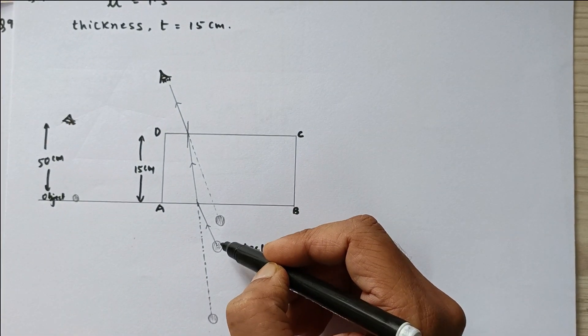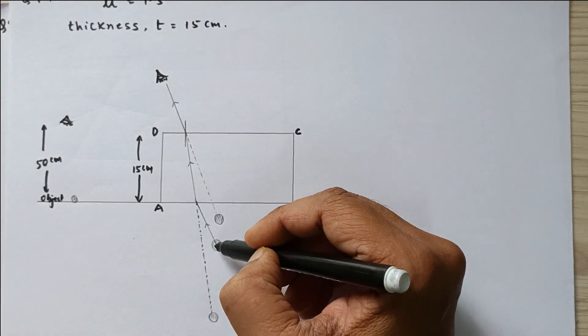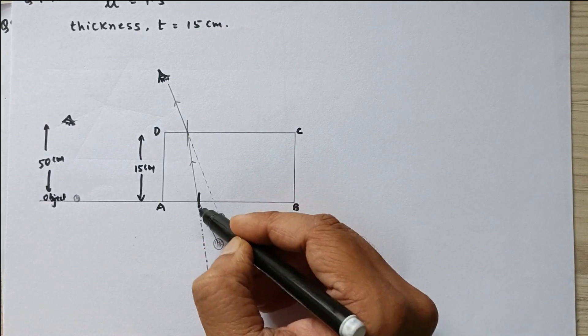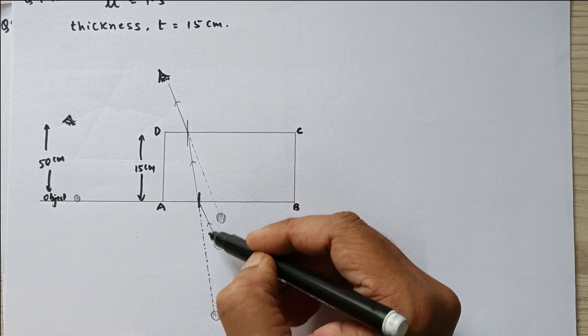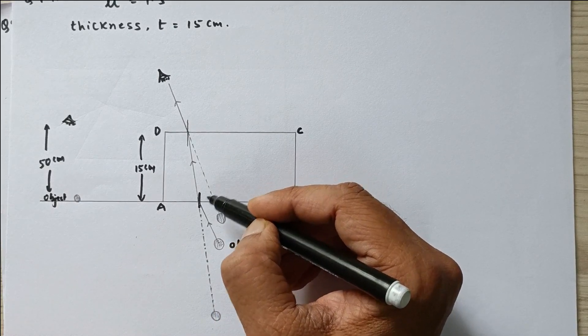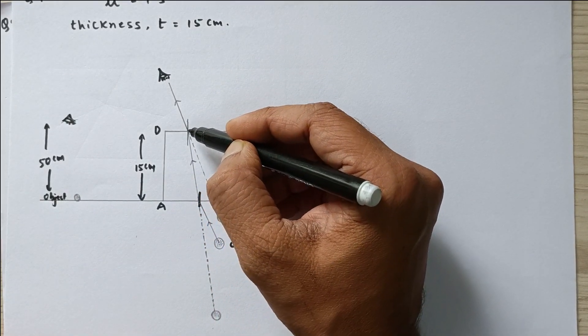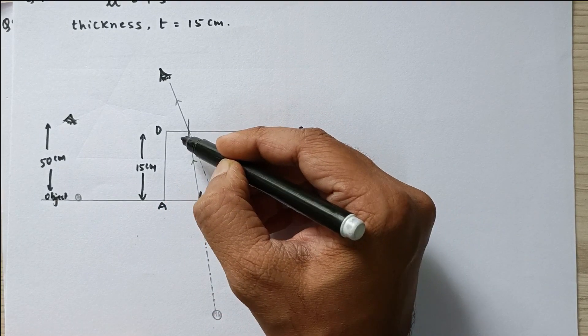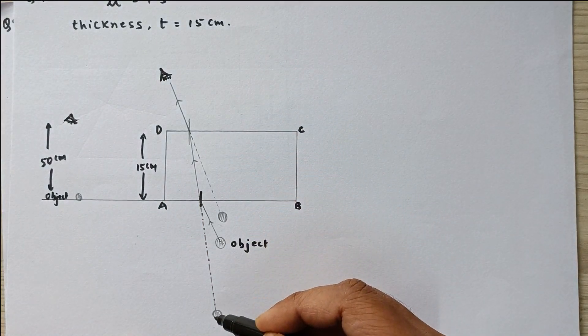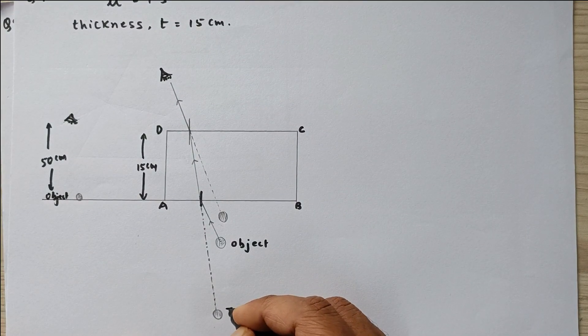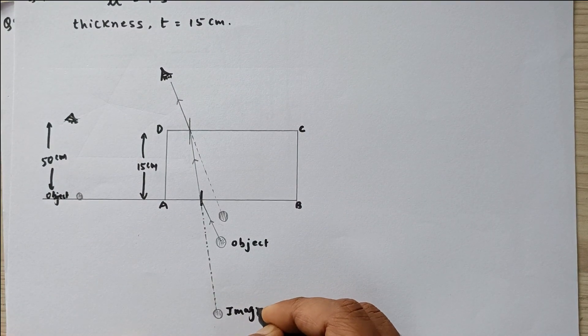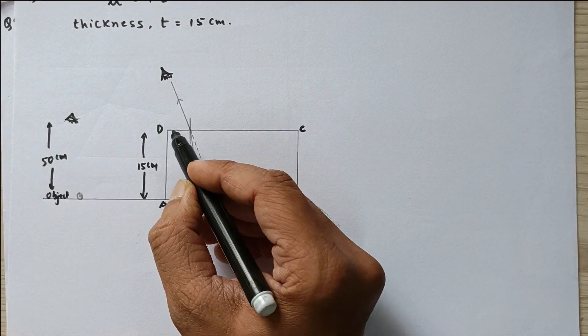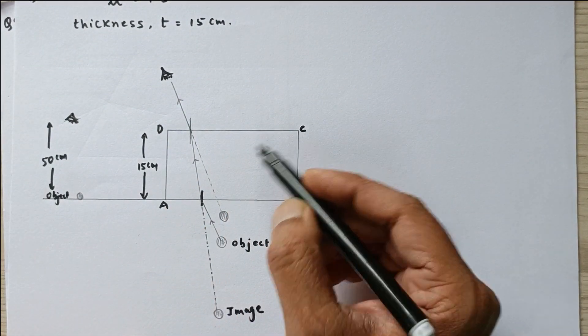Now you have to understand this very clearly that this is the actual object and the ray first of all encounters the refraction from the surface AB. So from air to glass it will bend towards normal. So when this ray falls on this surface, this ray appears to be coming from somewhere over here. So this image which is actually the image for this surface behaves as the object for this surface.